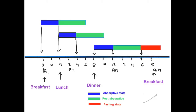Now let's see why breakfast is called breakfast. Consider that we take breakfast at 8 a.m. The lines indicate two-hour intervals from 8 a.m. The first four hours — from 8 a.m. to 12 noon — you are in absorptive state, shown in green. As you begin entering post-absorptive state around noon, you take lunch, breaking that transition.